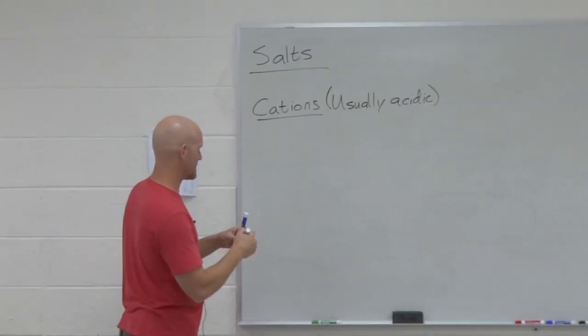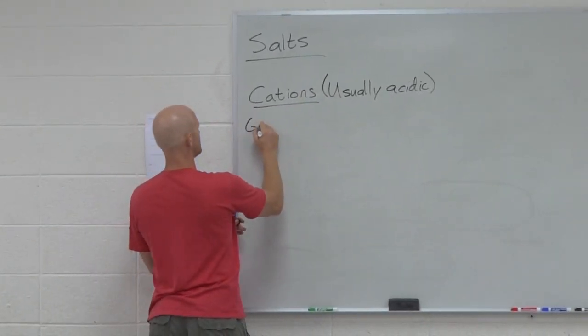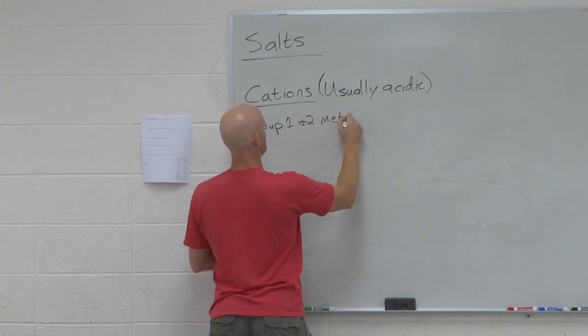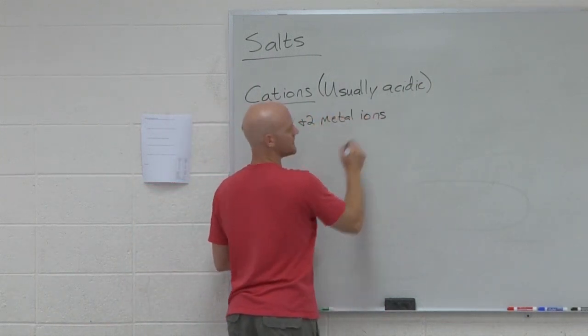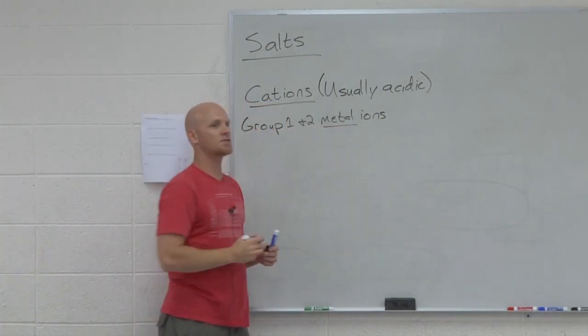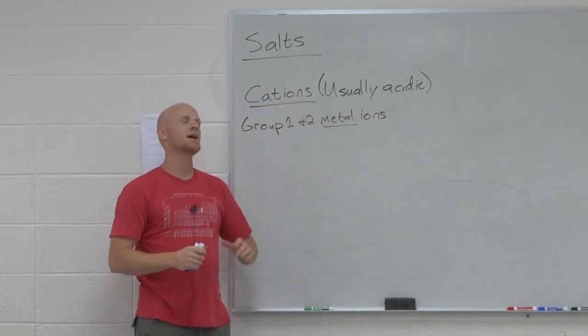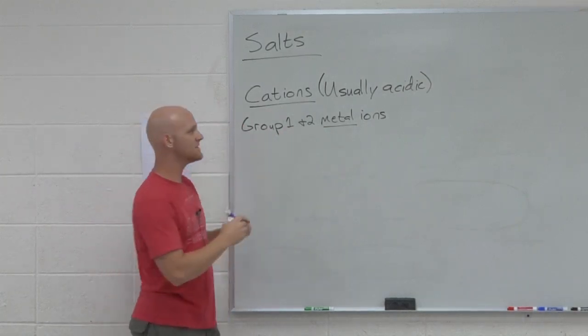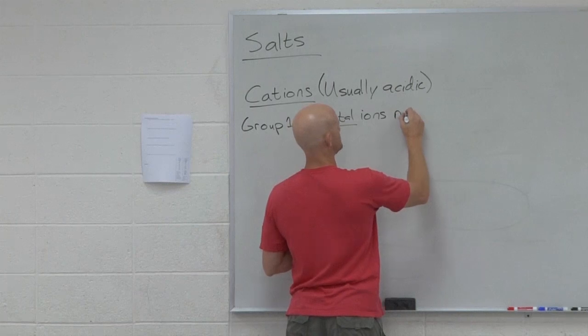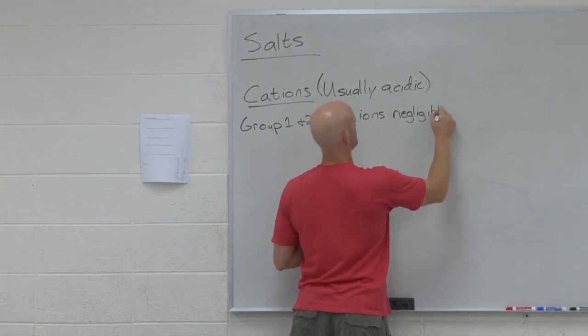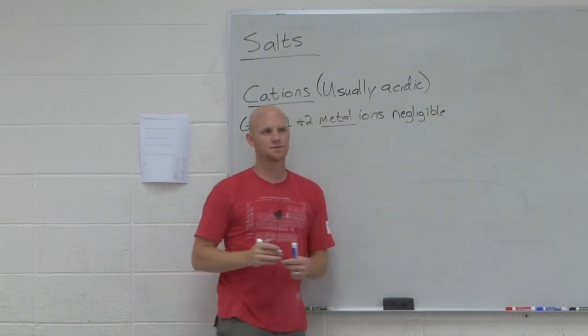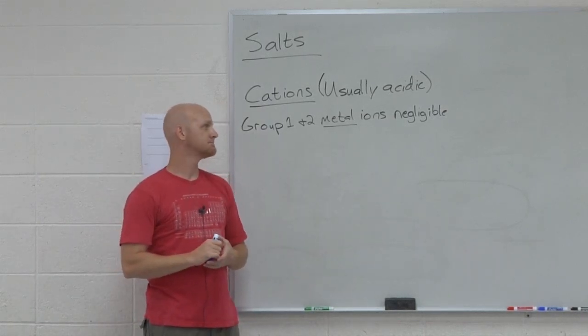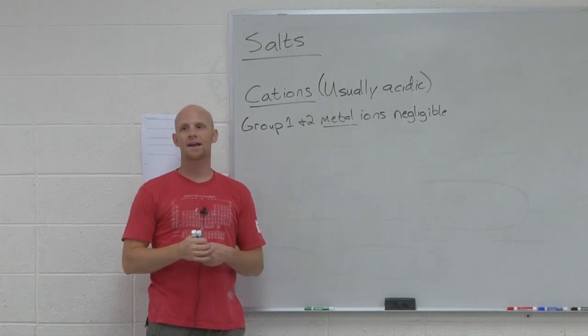If you look at the cations here, the group one and two metal ions. Notice I specifically said the word metal, because I don't want to include H plus in this. H plus is definitely an acid. But the group one and group two metal ions, they're negligible. They're not acidic virtually at all.